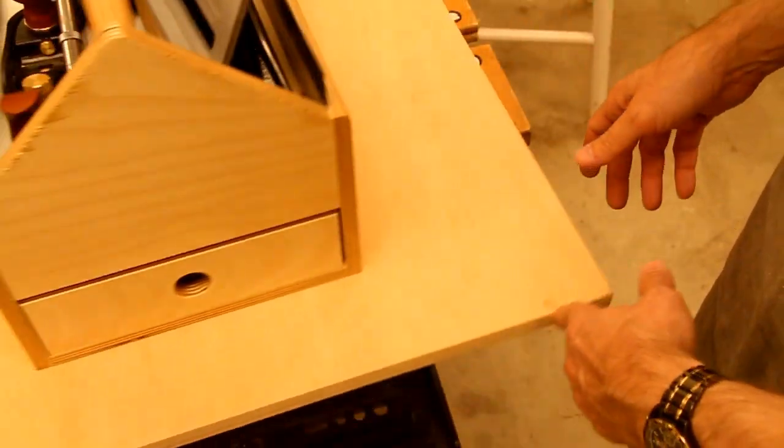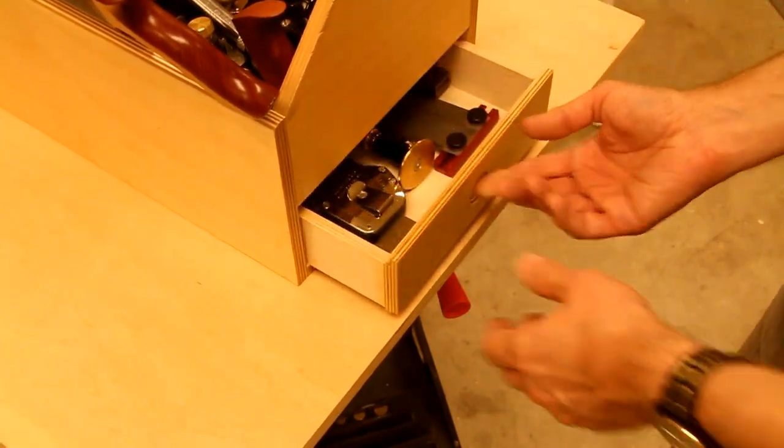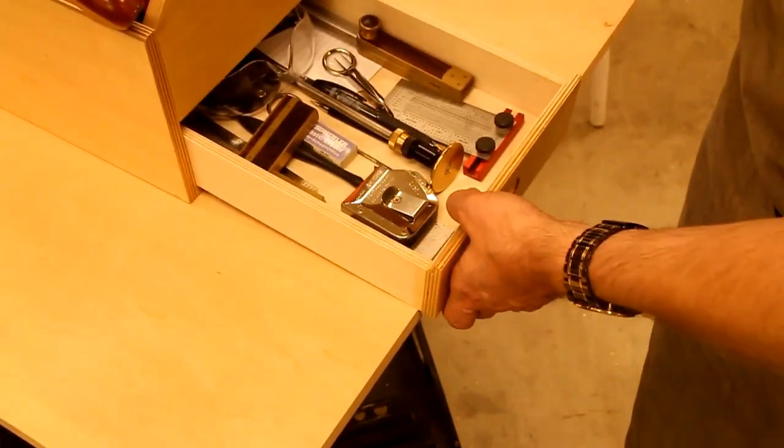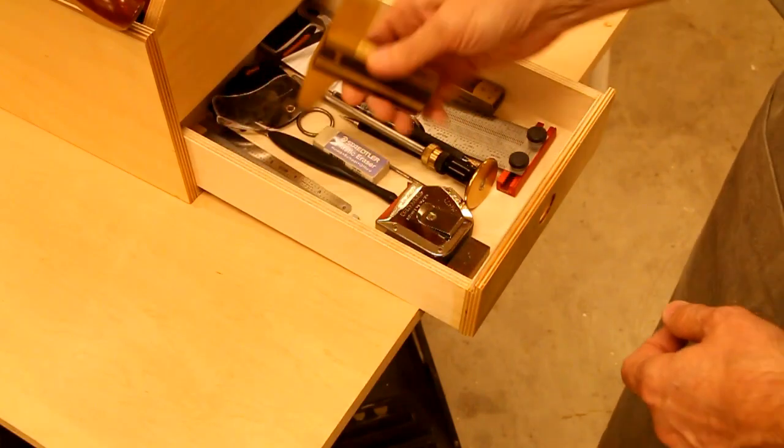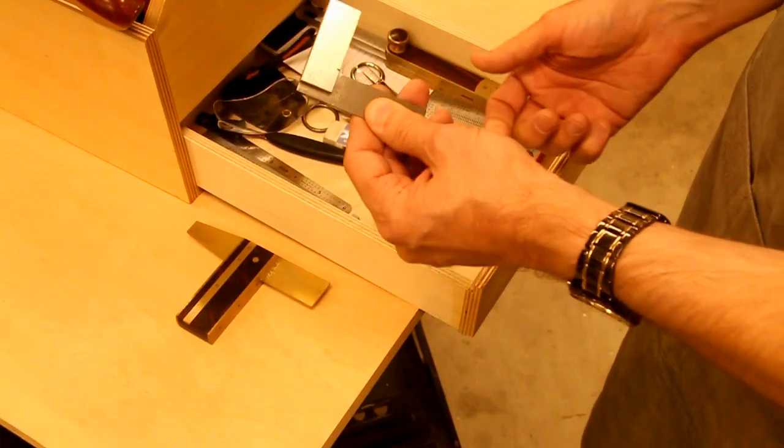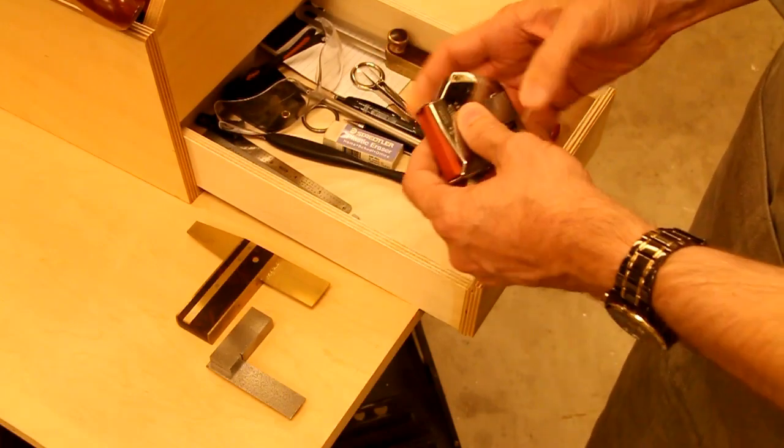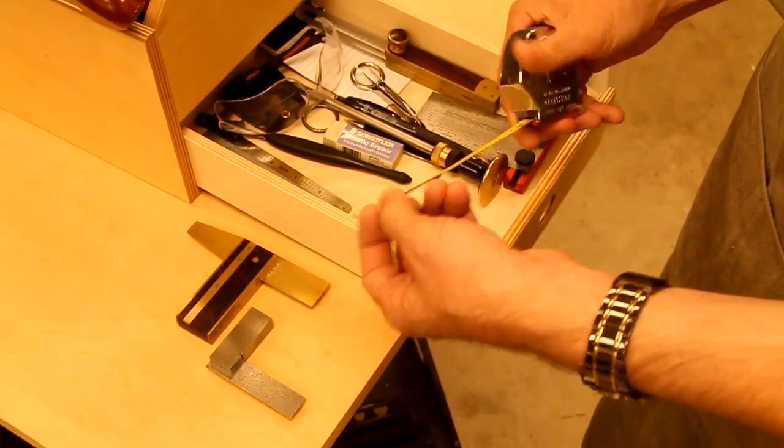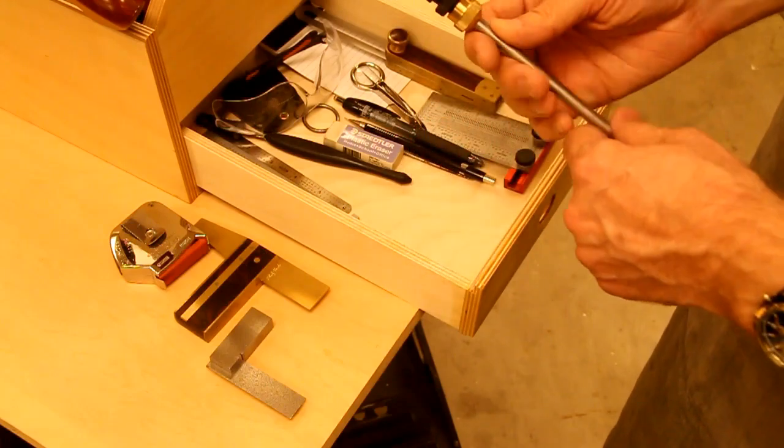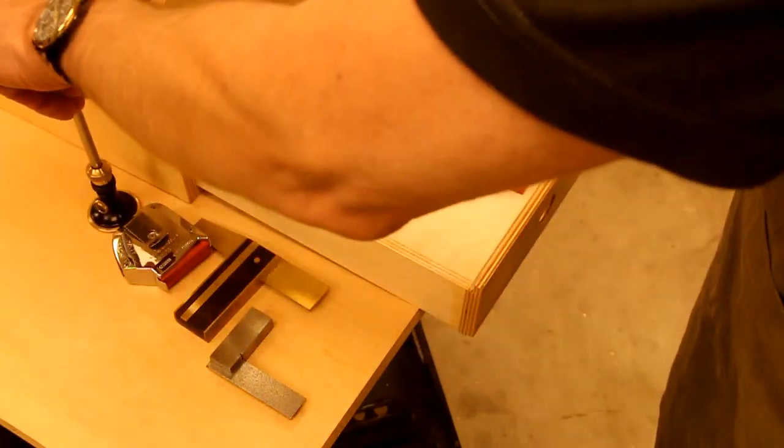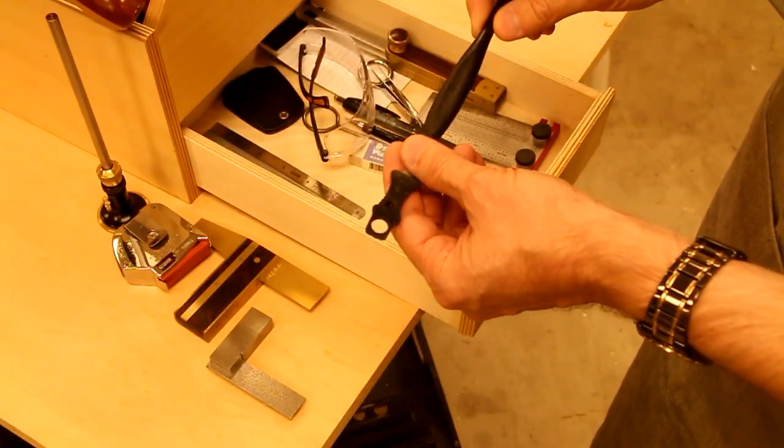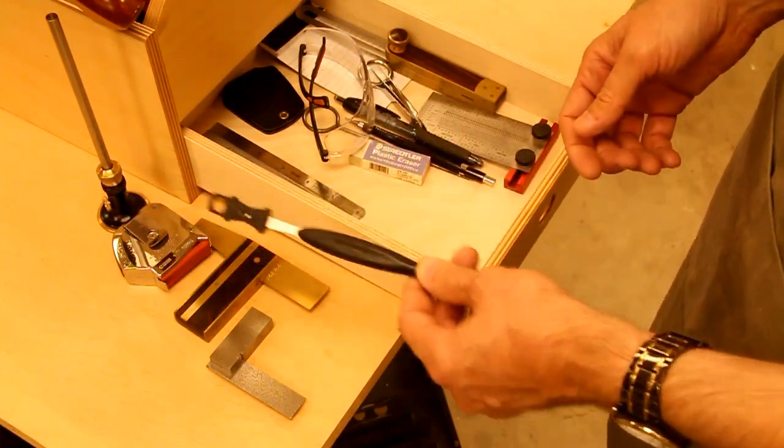Let's take a look at the other drawer. And this would be my, I'd classify as my marking tools. Dovetails, for marking dovetails. Small square. 12 foot tape measure. A marking gauge. Cutting knife. I really like these Veritas. They're really inexpensive and they work great.